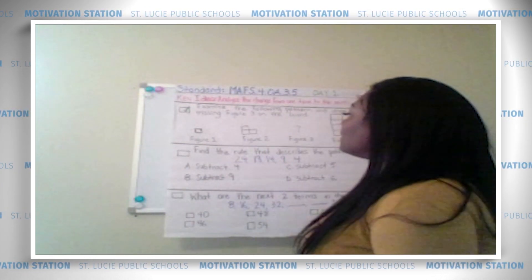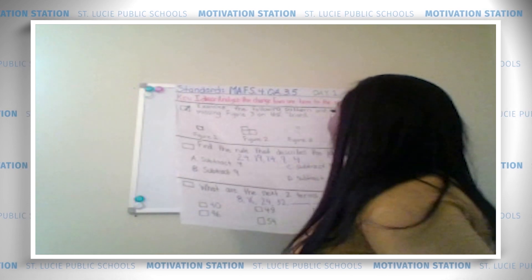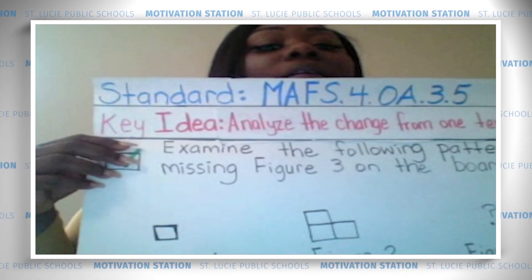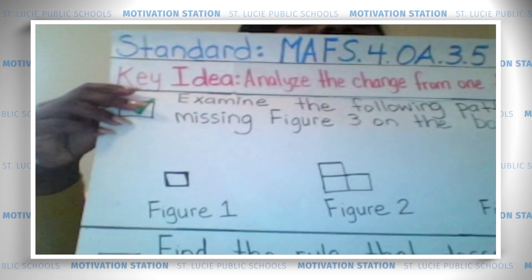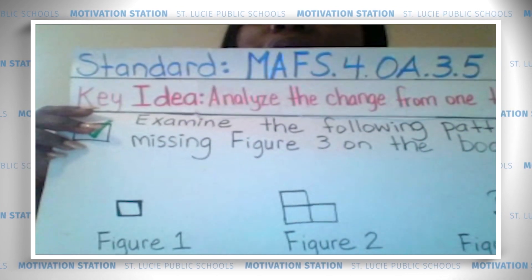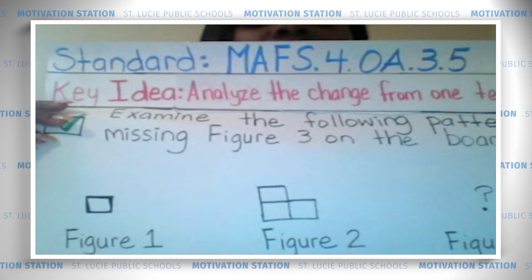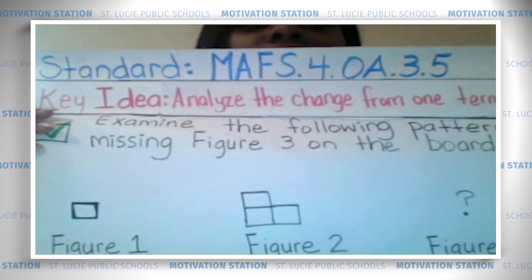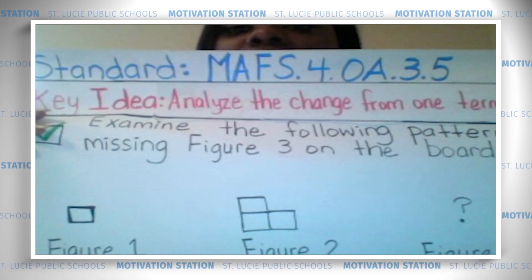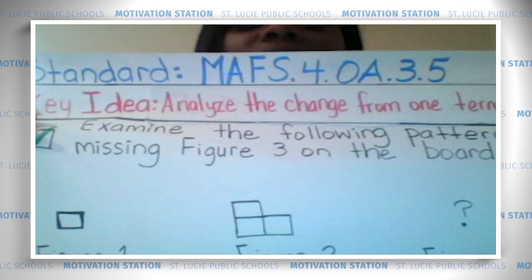The first problem says examine the following pattern and draw the missing figure three on the board. If you look at figure one, it's just a simple square. Figure one is actually term one. When you're talking about patterns, a term is like a group, so the first group or the first term is called figure one. When you look at the second term you have figure two — there are more tiles in figure two. There are three tiles. So the pattern went from one tile in the first term to three tiles in the second term.